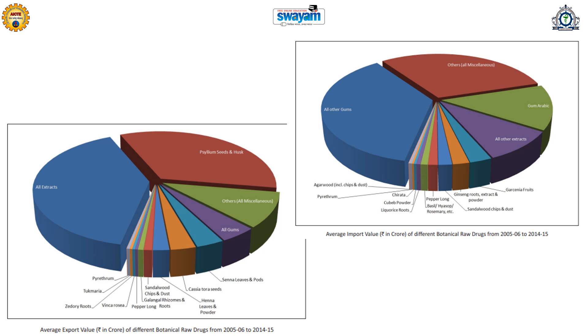There is a good import value for gums that are not cultivated in India, extracts of plants not cultivated in India, as well as chirata, cubeb, licorice, pyrethrum, agarwood, etc.